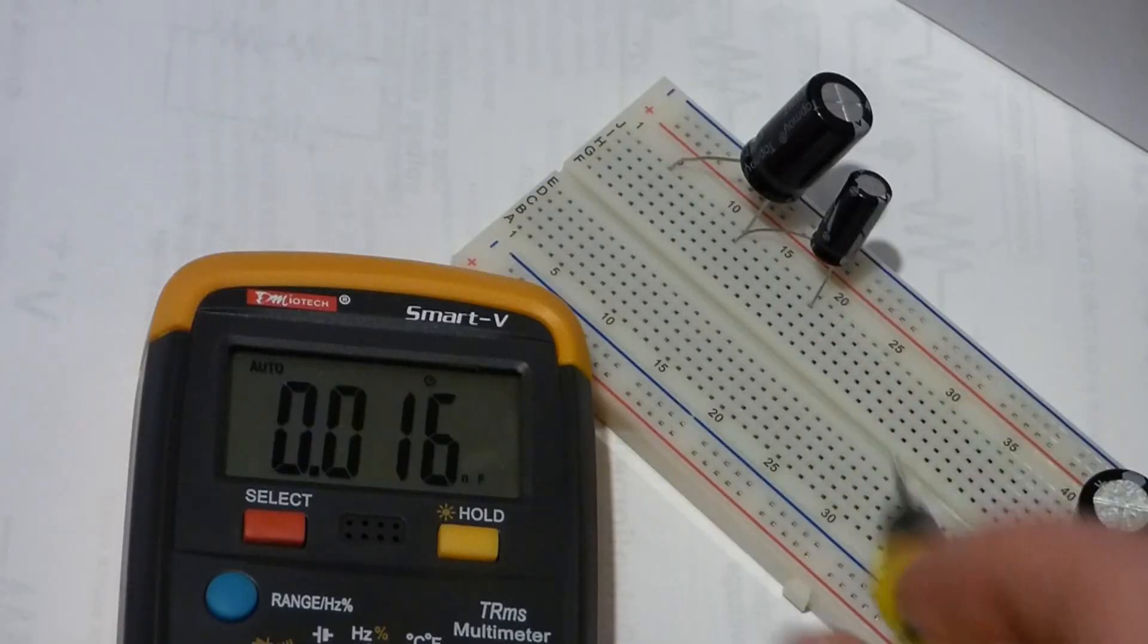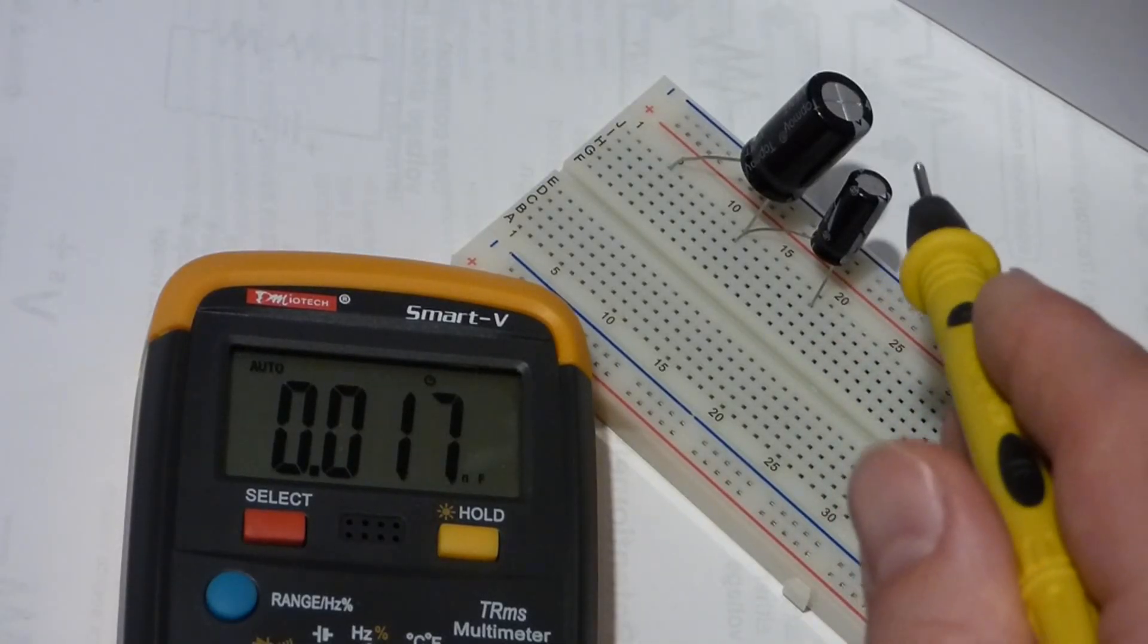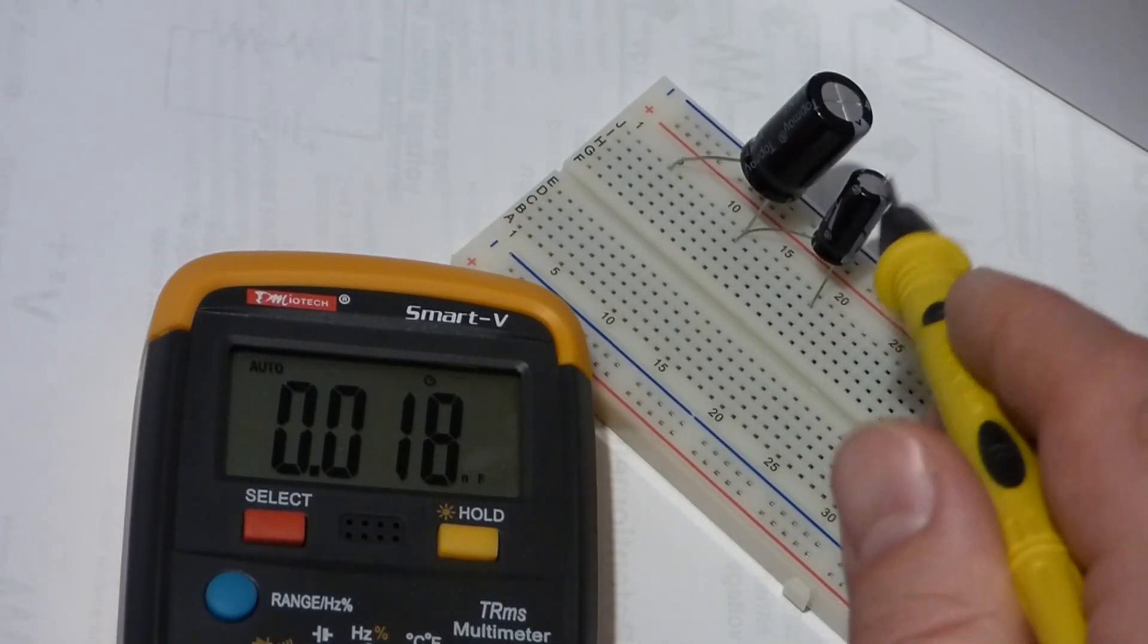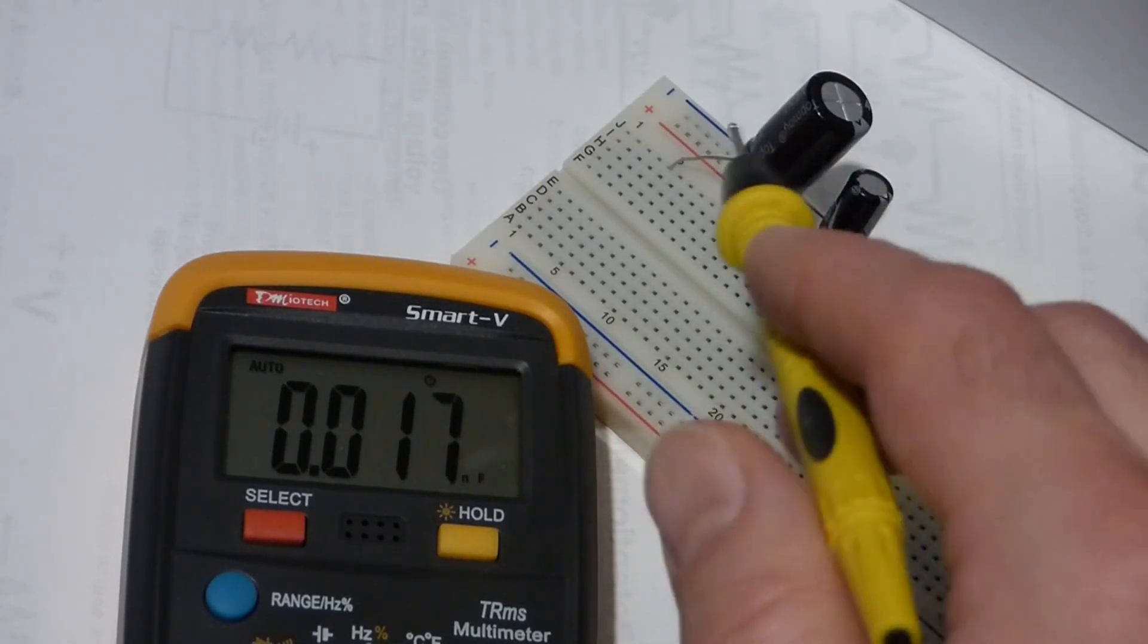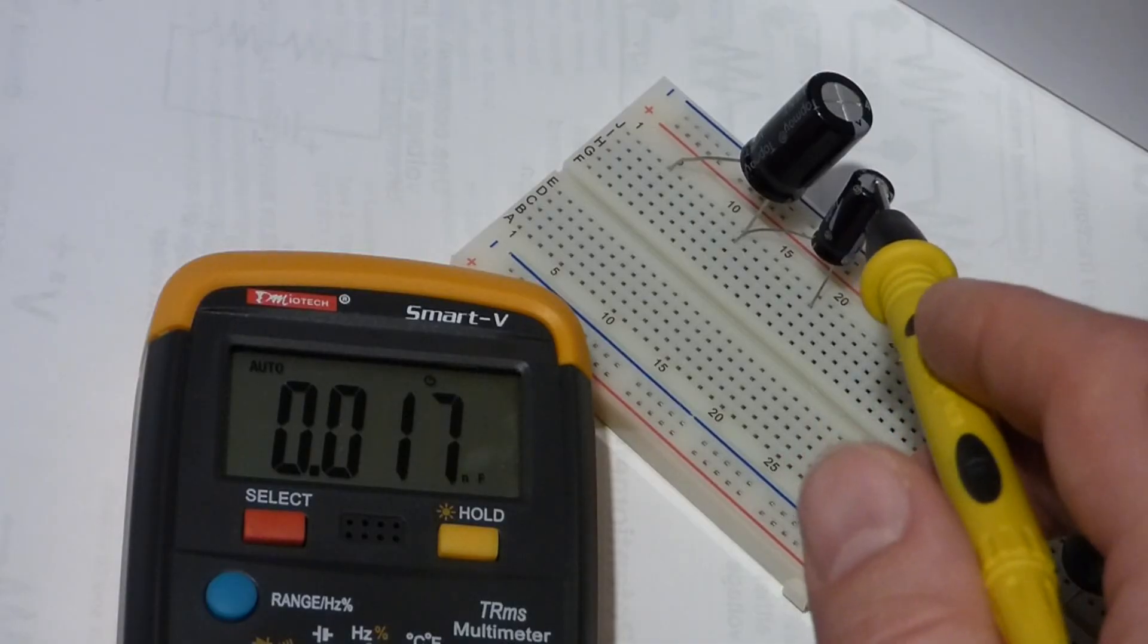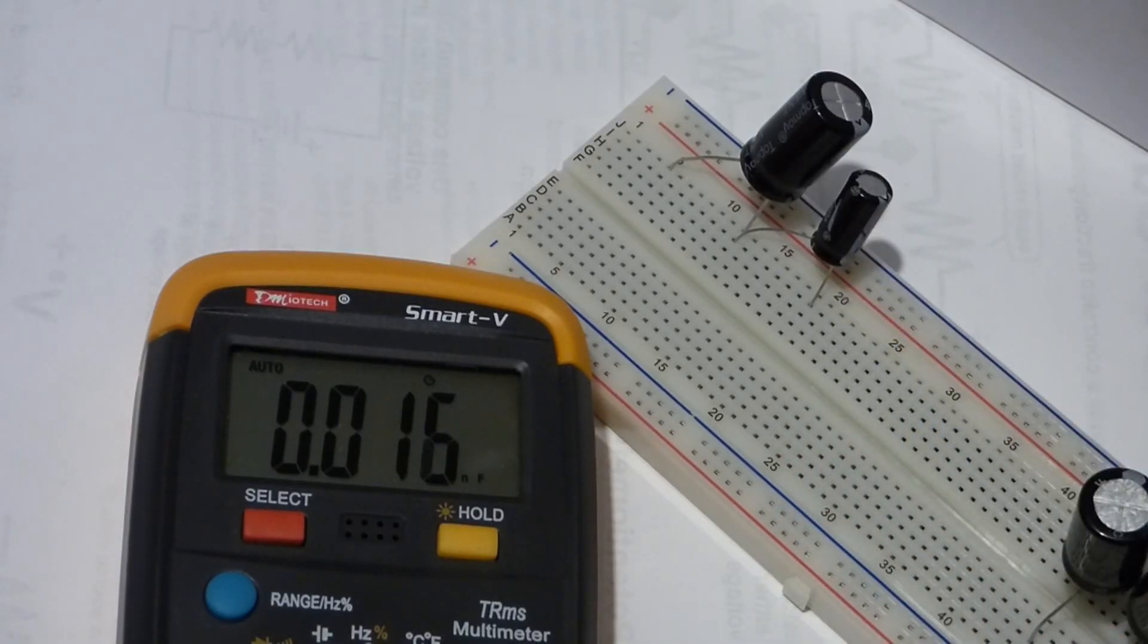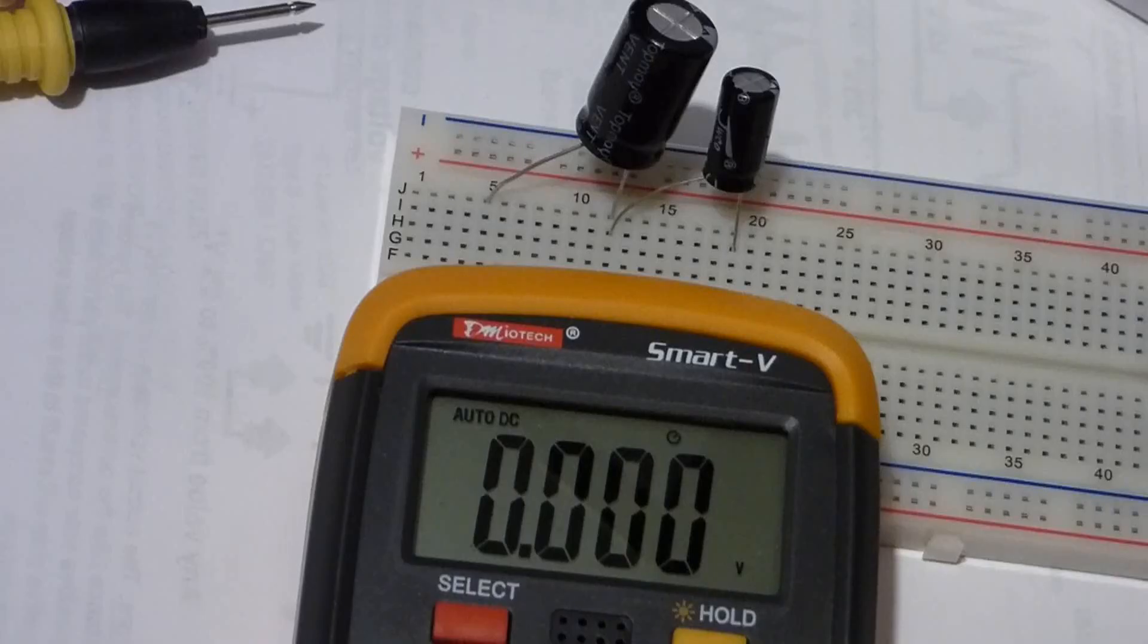So when you put them in series, the capacitance is always lower than even the lowest capacitor. No matter what size capacitors you're using. So the math gets complicated when you're using these. I'm trying to keep the math simple for this video. There's a lot more videos out there with the math if you're really interested in that.